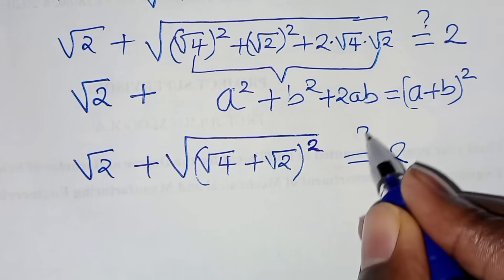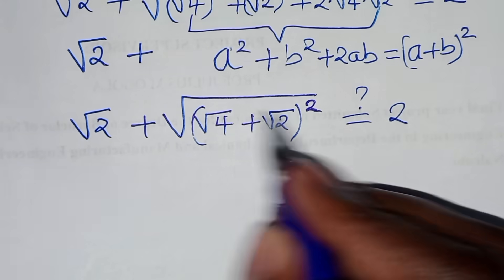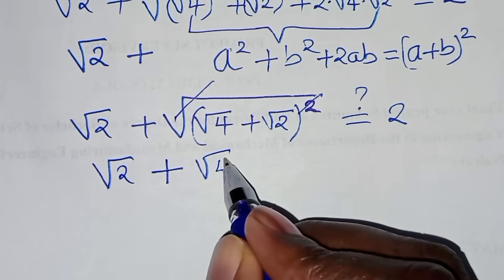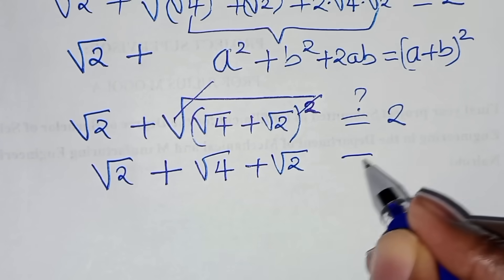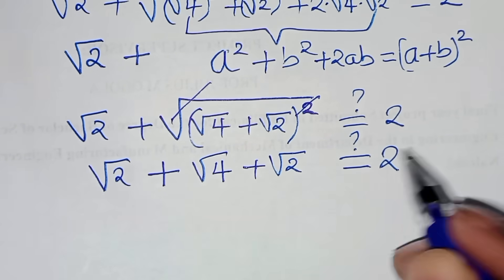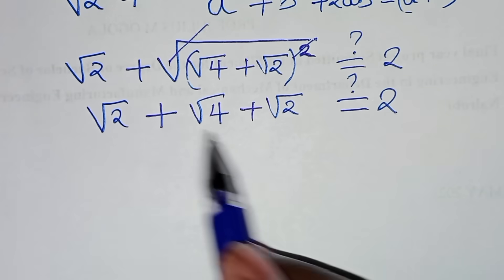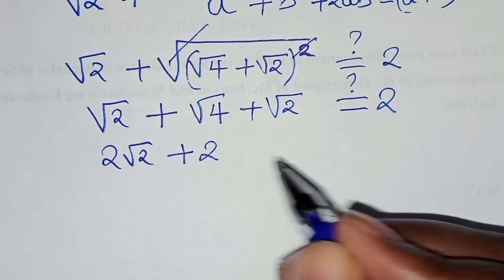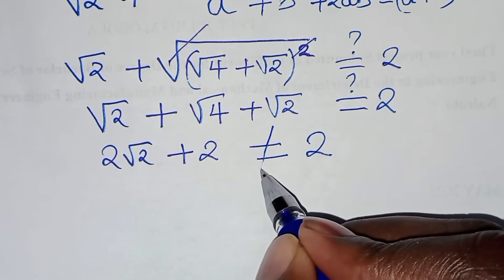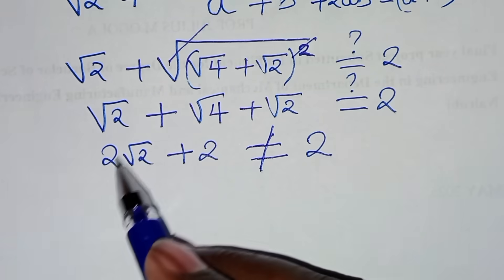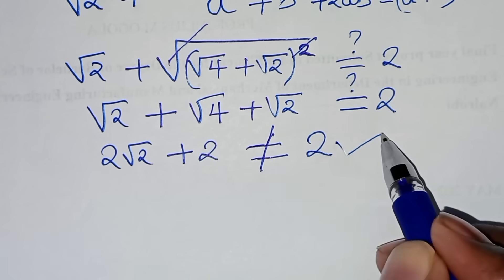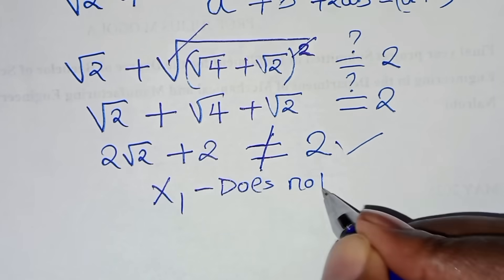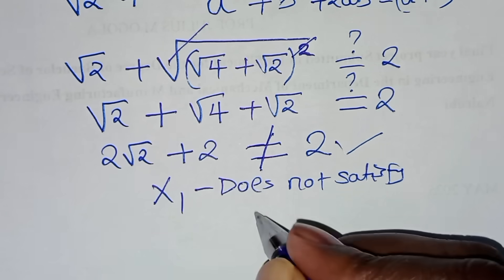So we end up with square root of 2 plus square root of 4 plus square root of 2, supposed to give us 2. Now clearly we have square root of 2 plus square root of 2, which is 2 square root of 2, plus square root of 4 which is 2. So the result is 2 square root of 2 plus 2, which is not equal to 2. Therefore x1 does not satisfy the equation.